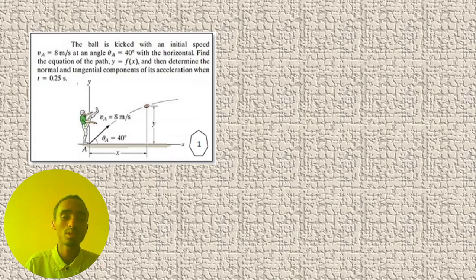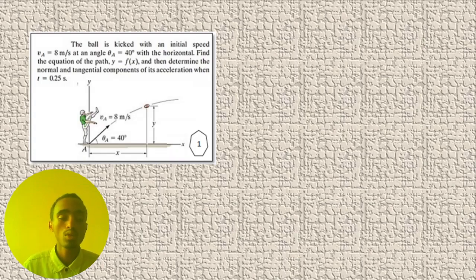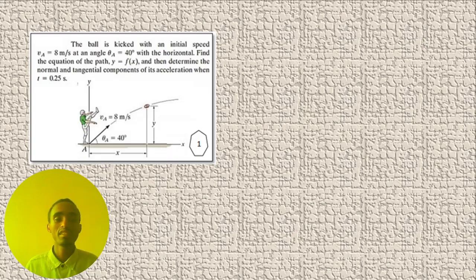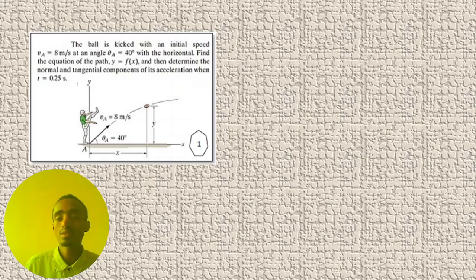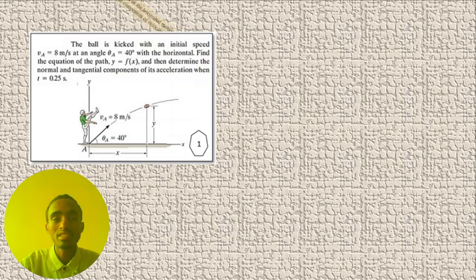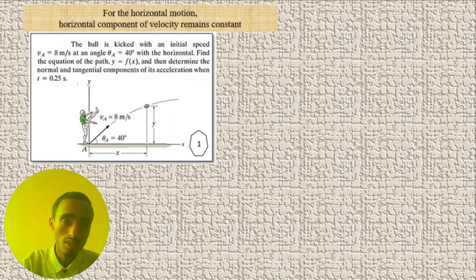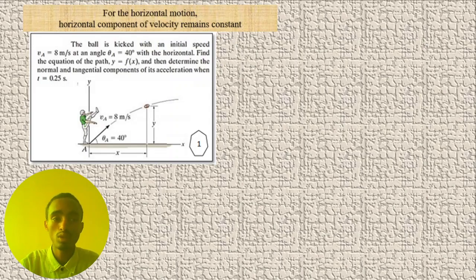Projectile motion is a two-dimensional motion because it has both vertical and horizontal components. To solve this problem, we use both horizontal and vertical equations of motion. After finding the path function, we can calculate the angle and then determine the normal and tangential acceleration. For horizontal motion, the horizontal velocity remains constant.